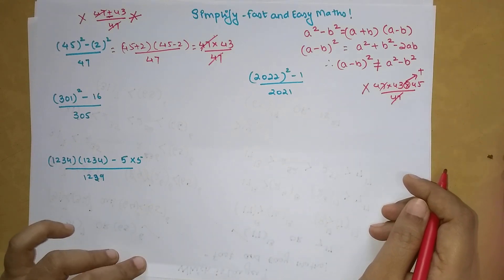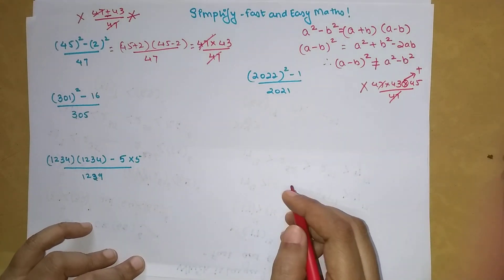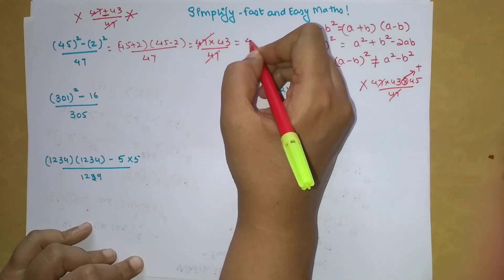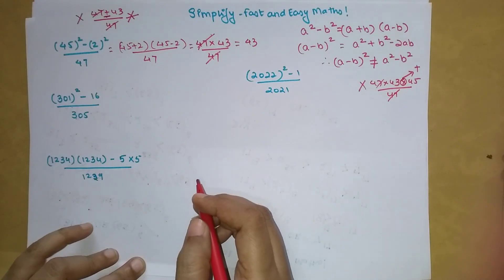I hope this is very clear to all of you. So here now, when you have cancelled 47 and 47, the answer left is 43.